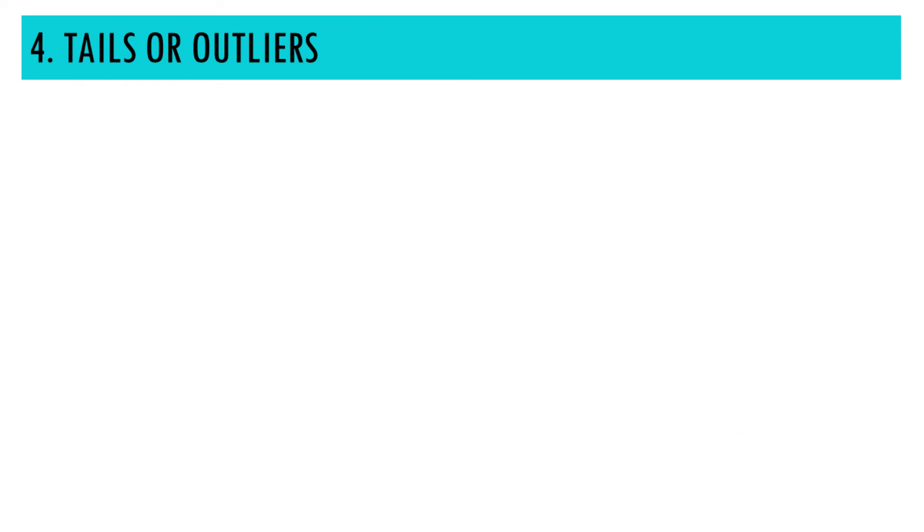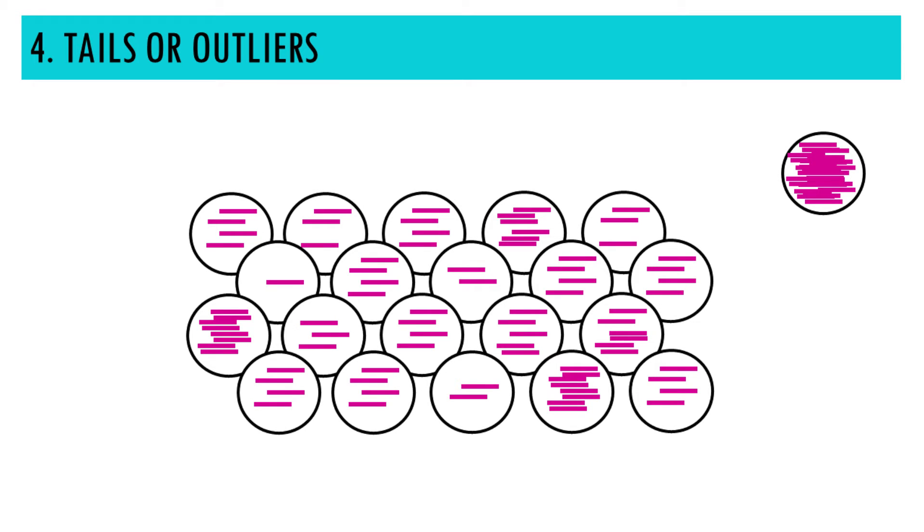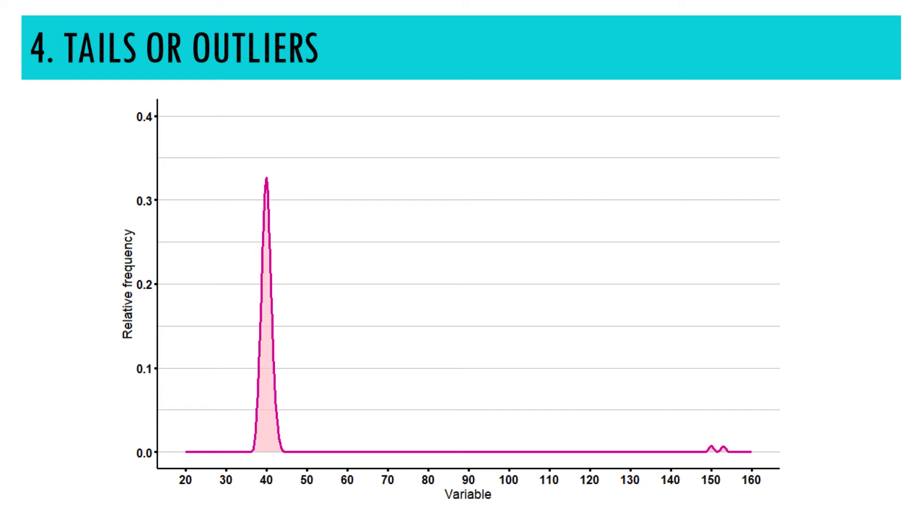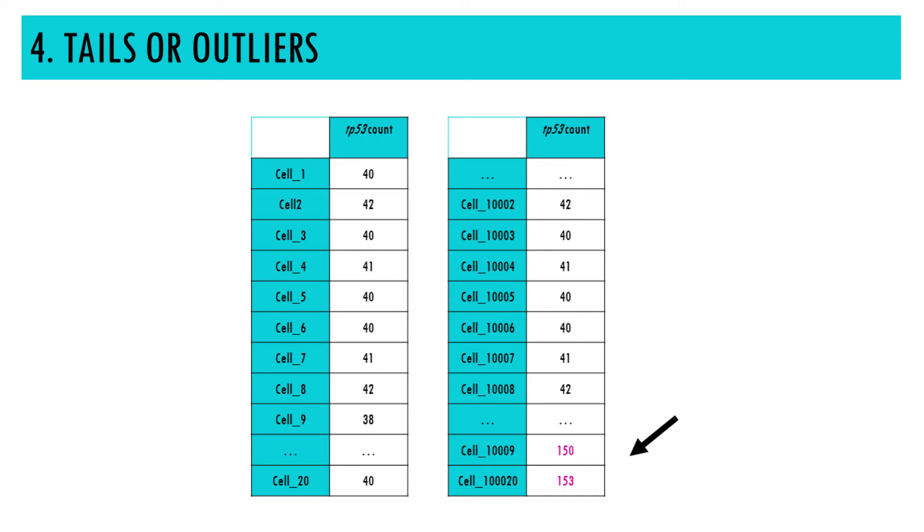Number four is the tails. The tails of the density curve represent the probabilities of extreme values, also called outliers. Longer tails indicate a greater probability of observing extreme values in the data set. For example, in this curve, there is one or two outliers that are making the curve right skewed. There is a long tail. So maybe it would be a good idea to have a look at those values a bit more closely.